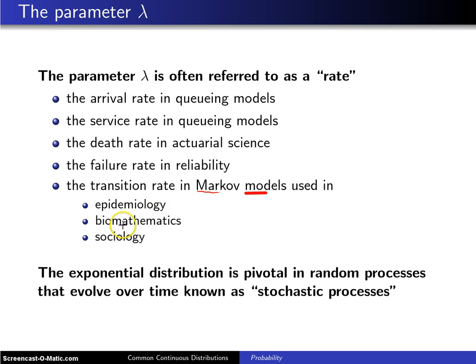Here's a quick example from biomathematics of a Markov model. You have four different states that are possible for the evolution of a disease. The first state is susceptible.